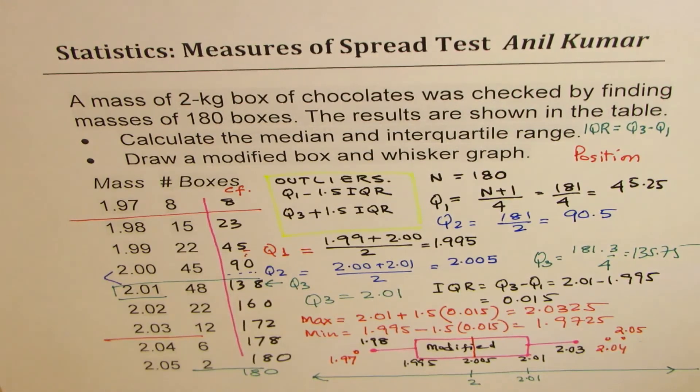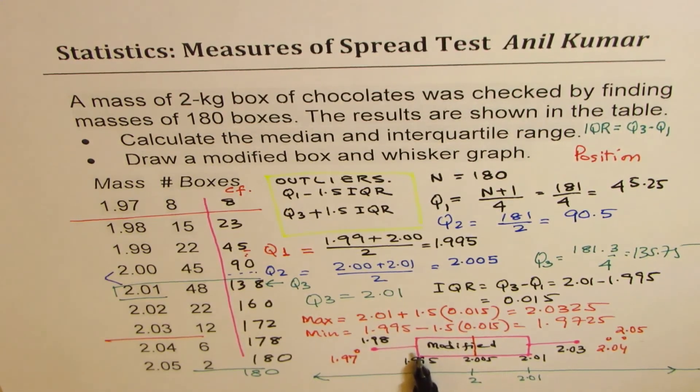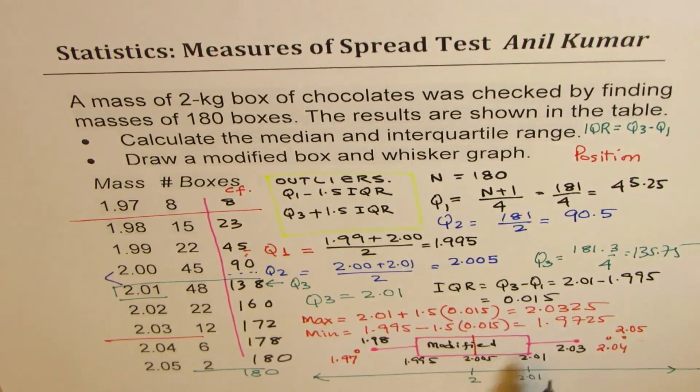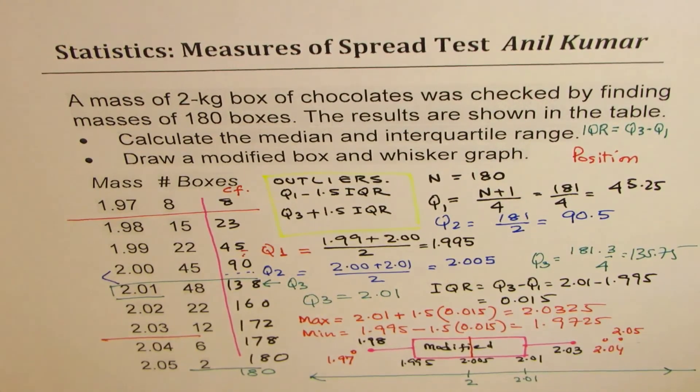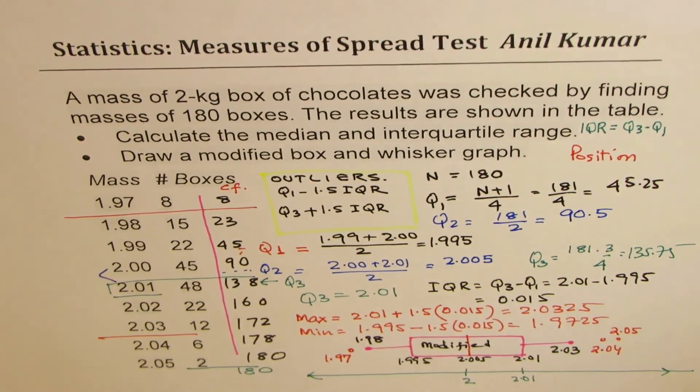From lowest datum to Q1 is first quartile, this is second quartile, third quartile, and fourth or upper quartile. And these are called the outliers.